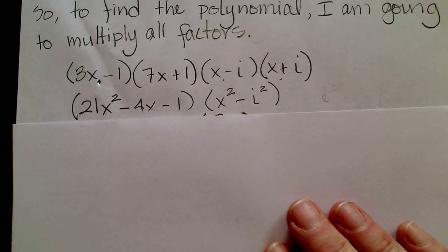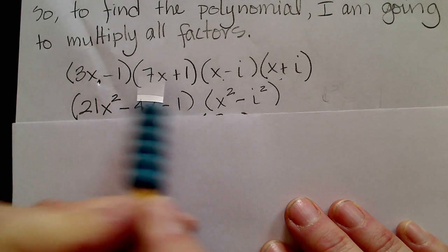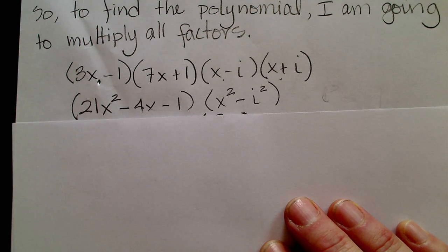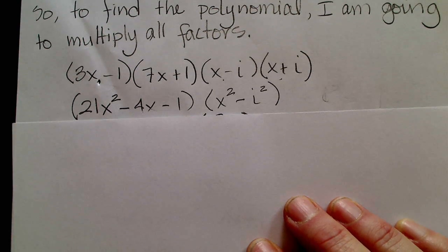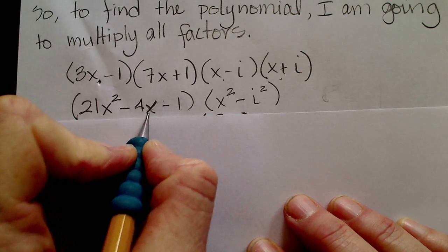And I end up with, if I foil these two, I get 21 x squared minus 4x minus one.